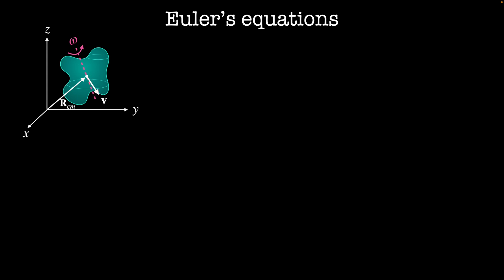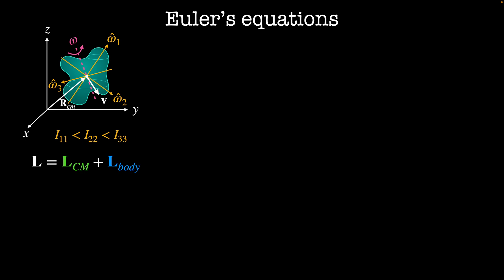This body has principal axes omega 1, omega 2, and omega 3, where i11 is the smallest moment of inertia and i33 is the largest. Previously we decomposed the angular momentum of this body into a translational component about the center of mass and another for the rotation of the body. These are the orbital and spin components of the angular momentum.